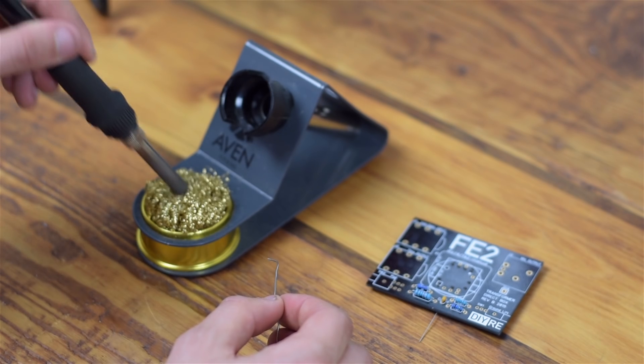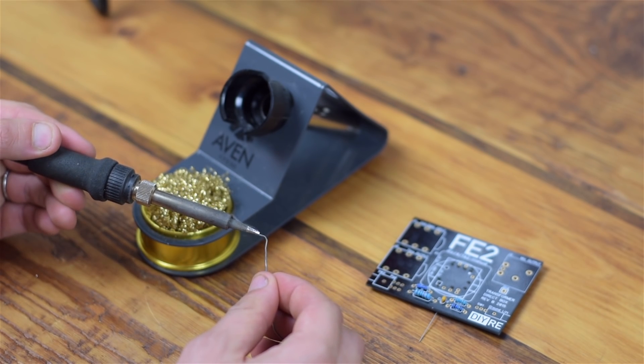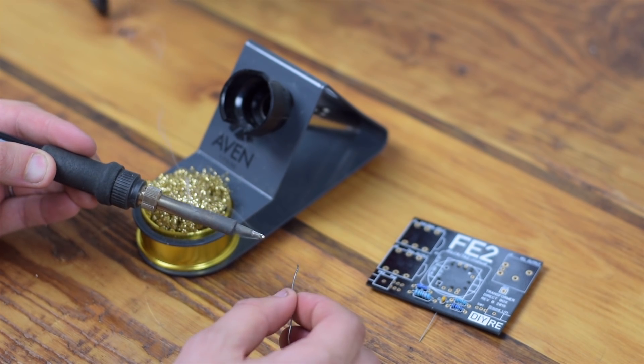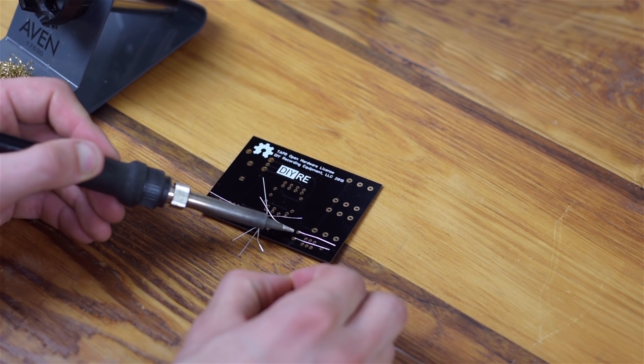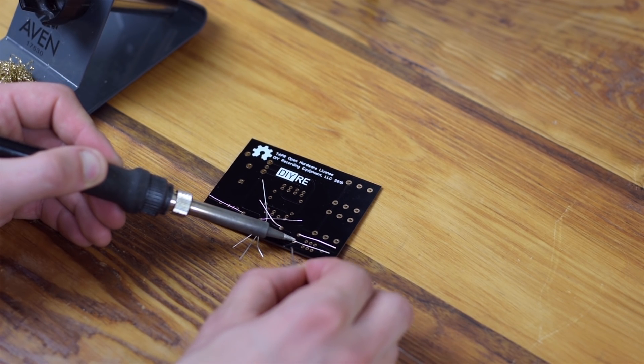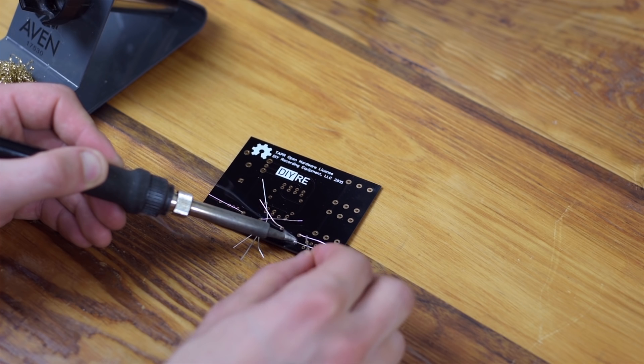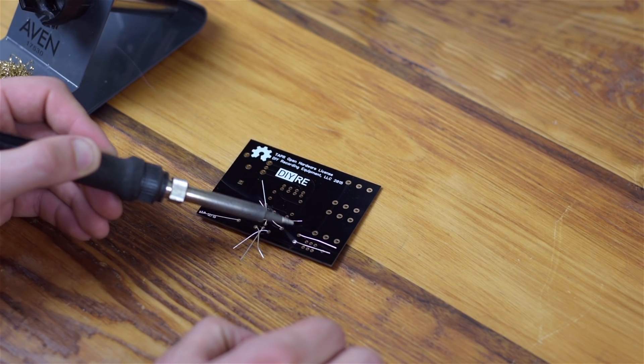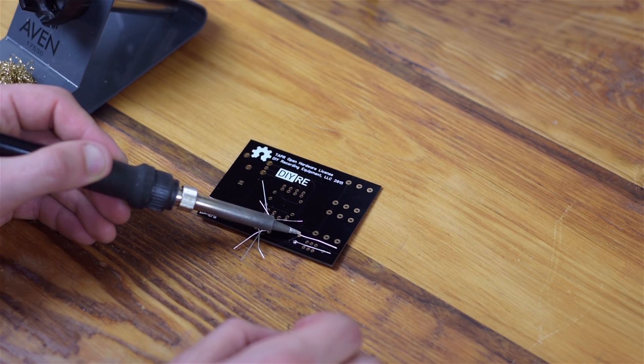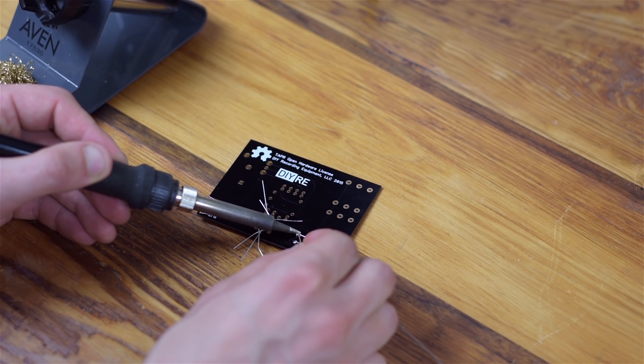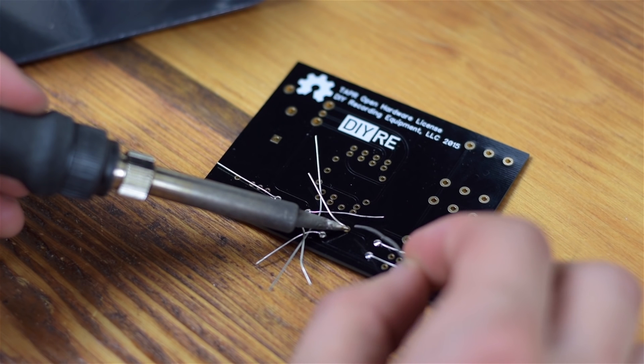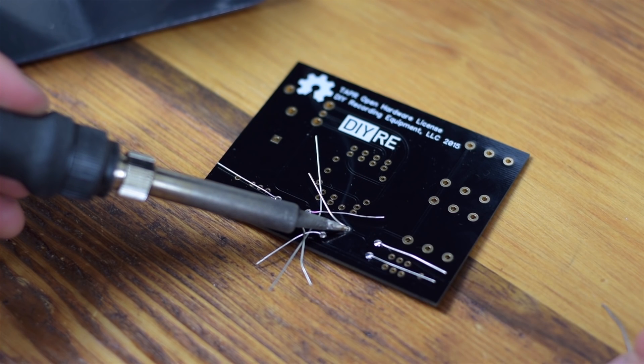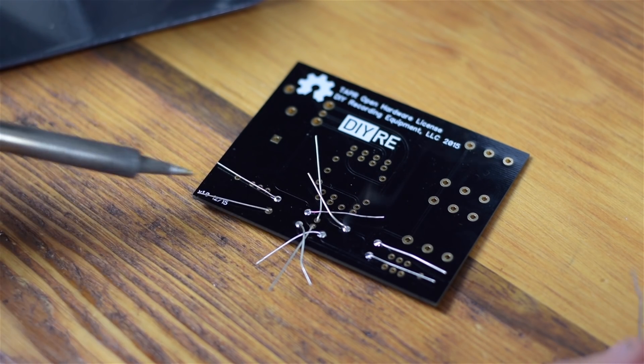Now solder these parts to the board. First, tin the tip of your iron by adding a little bit of solder, then heat the pad right where it meets the joint for a couple seconds. Apply a small amount of solder, and hold the iron in place for another couple seconds. Repeat this for each joint. Two seconds heating the pad, adding a little bit of solder, and then a couple more seconds on the pad.